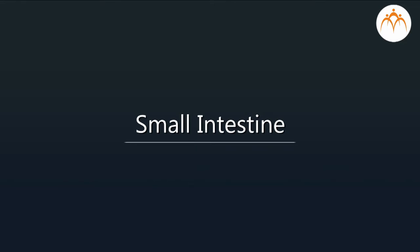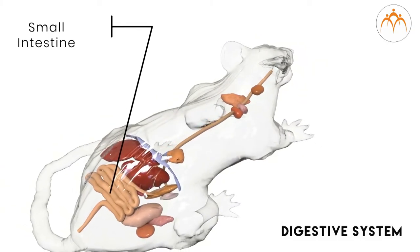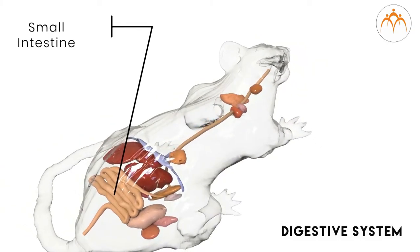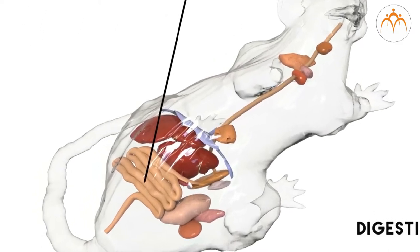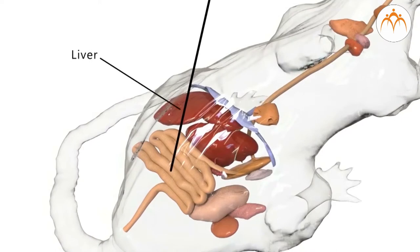You can see the small intestine has a long coiled tube. The human small intestine is also a narrow elongated tube. You can see that the liver and pancreas are connected to the small intestine. Here, food is completely digested, including breakdown of fats, oily substances, proteins, and carbohydrates.